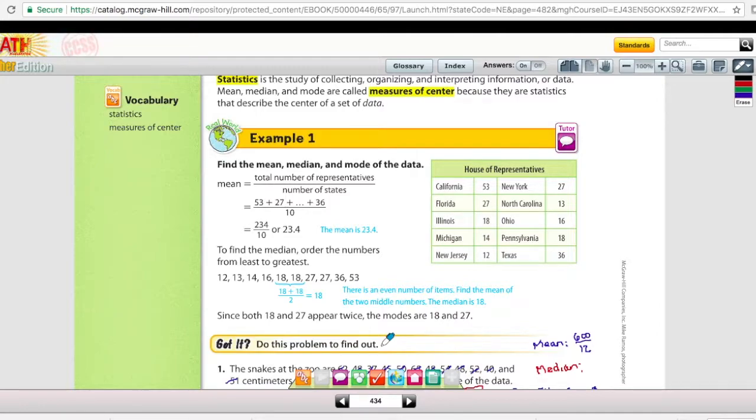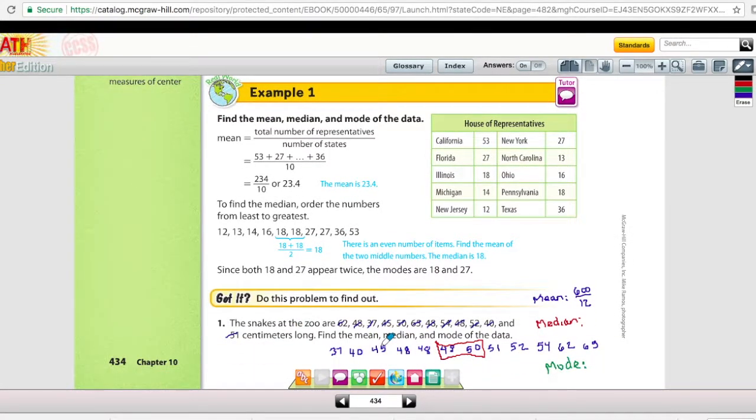At the bottom of page 434, the got it problem that I want you to write down on your note sheet, I've done some pre-work here. For the mean, I've already added up all the numbers. It totals 600. And then there are 12 data points, so 600 divided by 12 is equal to 50. So the mean of the data is 50. The median is when you line up all the numbers in order from least to greatest. And then the two middle numbers, in this case there's two middle numbers, so we're going to find the average of those two. The number between 48 and 50 is 49. So the median is 49. And lastly, the mode is the one that occurs the most often. And it looks like there are three different times that 48 appears. So the mode is 48. Please write those items down on your note sheet.